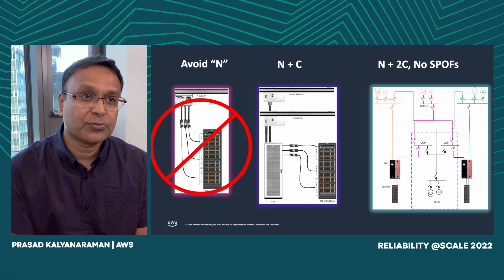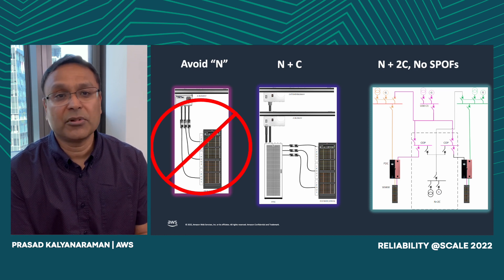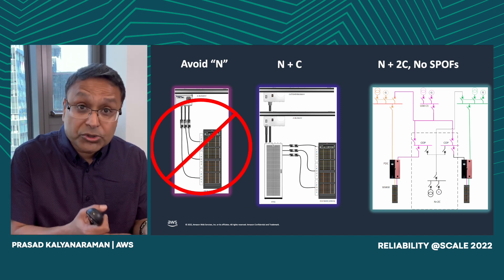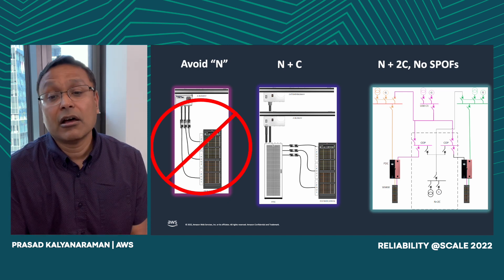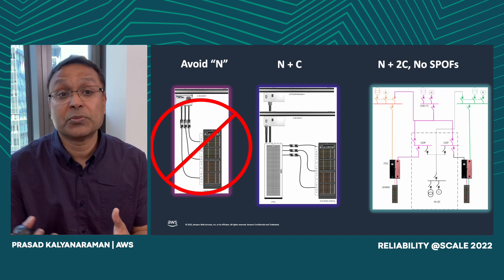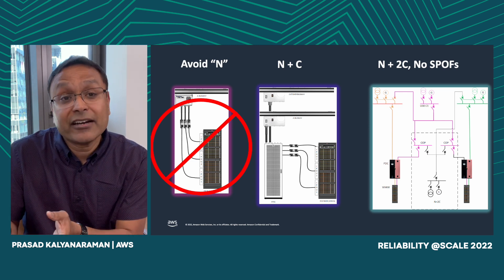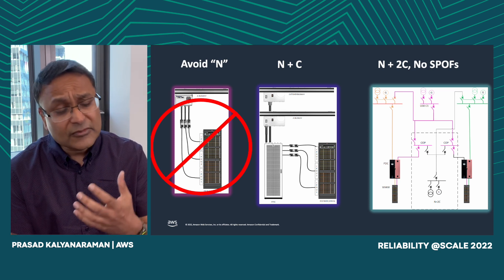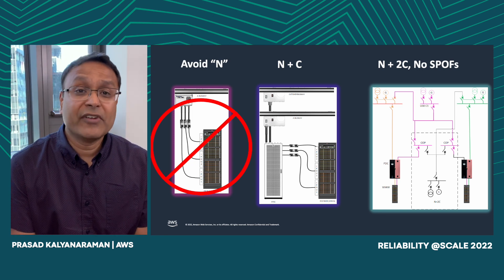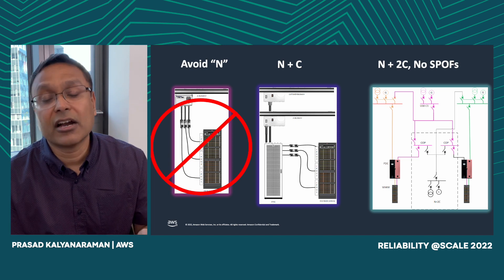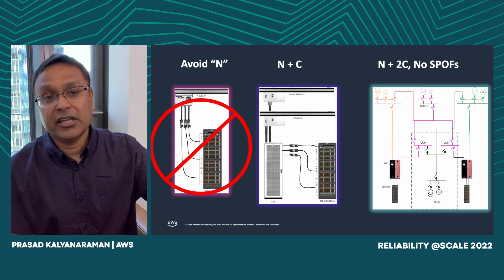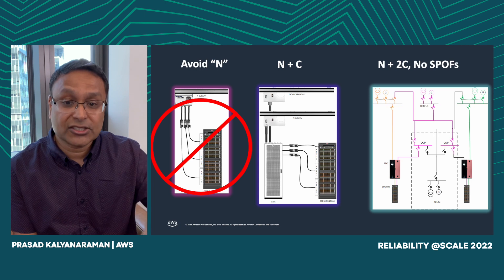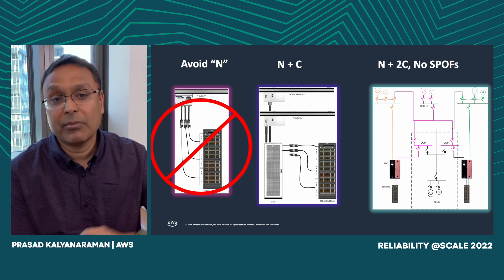We realized we actually need to design with N plus 2C. The reason is that when you do maintenance on a particular lineup — like breaker maintenance — you become vulnerable because you've reduced redundancy. So our latest designs have N plus 2C, meaning two catchers: two lineups independently available to take load if there's a problem on a primary. We also ensured there's never a single point of failure across the entire electrical infrastructure, from the utility feed to the changeover panels, PDCs, and ATSs — which we moved to the racks themselves, including battery backup units on the racks.